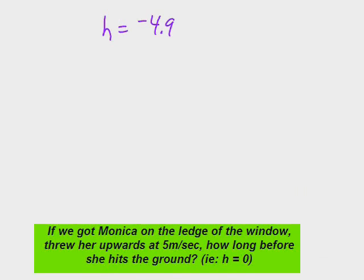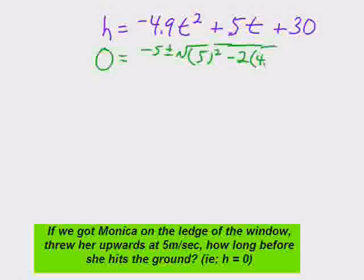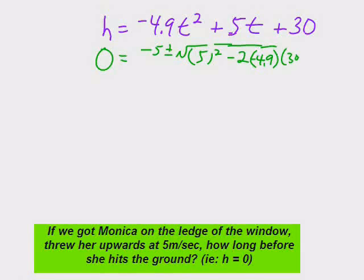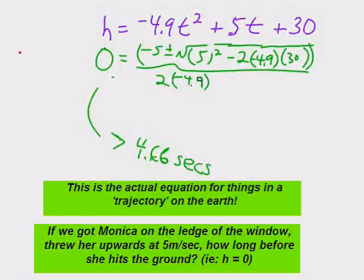Here was an example of if we stood Monica on the ledge of the window, we're 30 meters up, and we decided to give her a little boost, 5 meters upwards per second. How long before she hits the ground? The actual equation for height on the Earth of anything flying through the air is 4.9 times t squared plus 5 times t plus the height you start at, so 30 meters. And the 5t just means we gave her a boost upwards. When you plug in those numbers, you end up with, in the quadratic formula, 4.6 seconds for her to impact the ground.